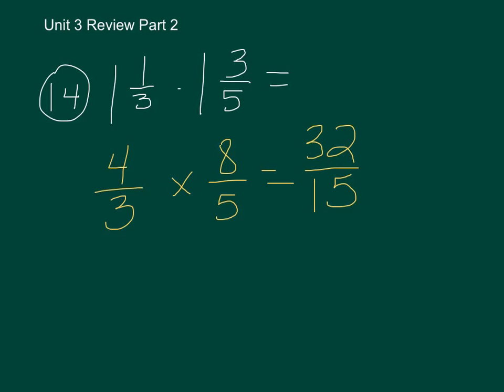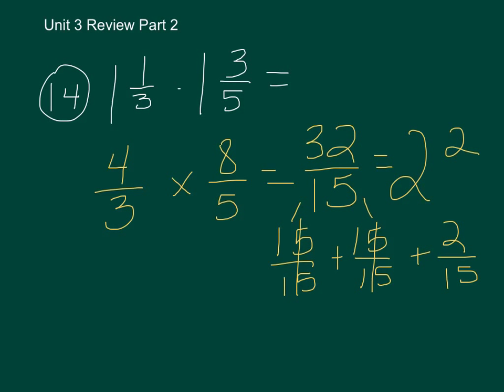Now, I have a product, but it's greater than 1. It's that old improper fraction kind of an idea, and we need to simplify it. Well, let me think about this. If I have 32 fifteenths, that means I have 15 fifteenths and another 15 fifteenths. That's 30 fifteenths, right? And then another 2 fifteenths more. Well, what's that going to look like? 1 whole plus 1 whole plus 2 fifteenths. 2 and 2 fifteenths, brothers and sisters. Give it up.